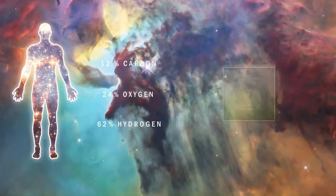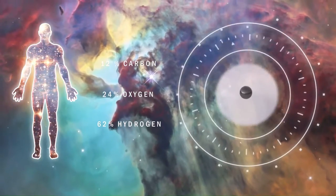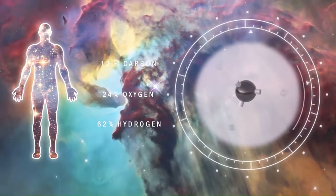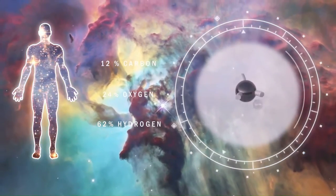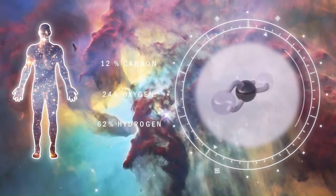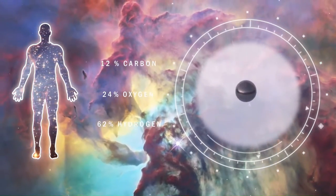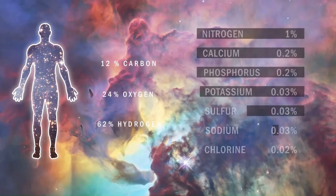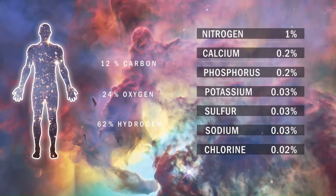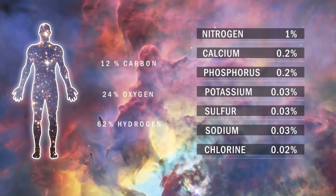Stars aren't simply shiny things that twinkle in the night. Inside stars, a series of nuclear burning stages transforms the star into an onion-like shell structure that produces heavier and heavier elements in various stages — elements like silicon, neon, calcium, copper, chromium, carbon, oxygen — the list goes on and on.